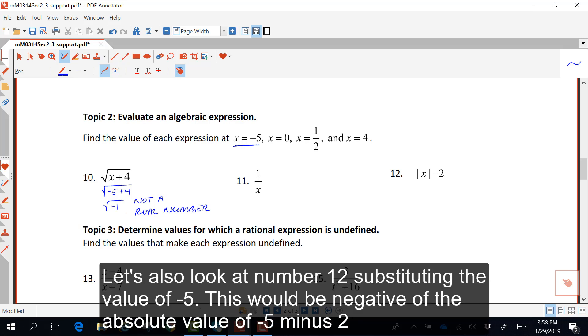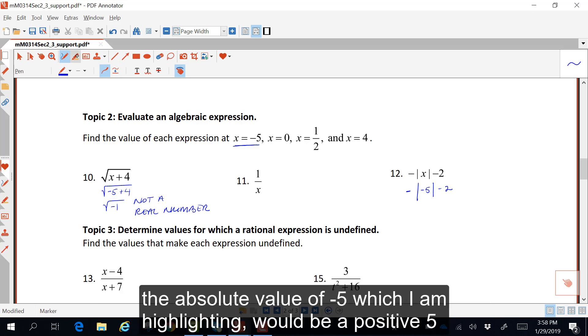Let's also look at number 12, substituting the value of negative 5. This would be negative of the absolute value of negative 5 minus 2. The absolute value of negative 5, which I am highlighting, will be a positive 5.